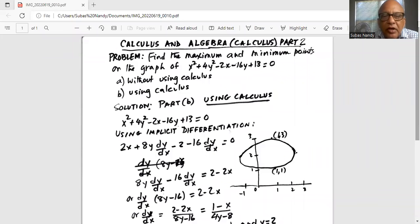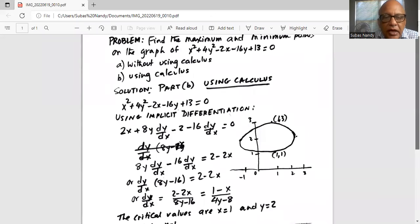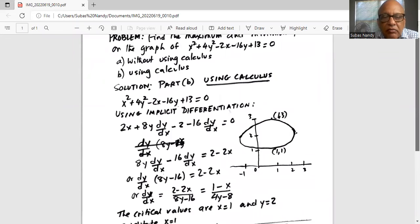This is calculus in algebra, calculus part 2. Problem: find the maximum and minimum points in the graph of x² + 4y² - 2x - 16y + 13 = 0. Part B is using calculus. Part A I have already done in part 1, so we will do part B: x² + 4y² - 2x - 16y + 13 = 0.